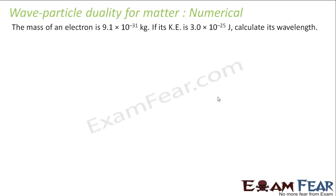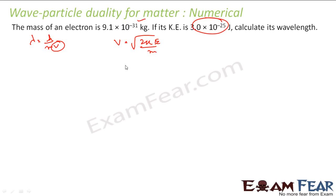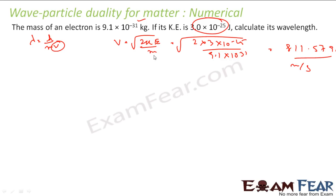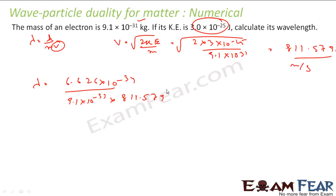The mass of the electron is 9.1×10⁻³¹ kg and the kinetic energy is given — find the wavelength. λ = h/mv, and I need to find v = √(2 KE / m). So v = √(2 × 3×10⁻²⁵ / 9.1×10⁻³¹) = 811.57 m/s. Then λ = h/(mv) = 6.626×10⁻³⁴ / (9.1×10⁻³¹ × 811.579) = 8.9625×10⁻⁷ m, and that is the answer.